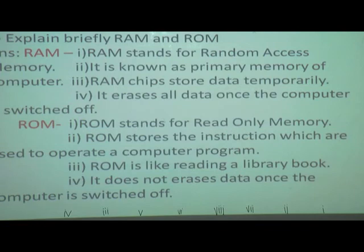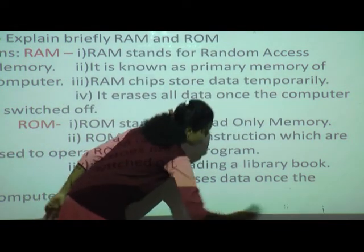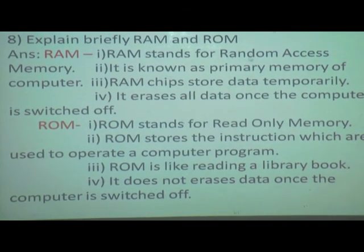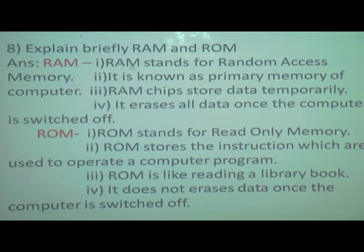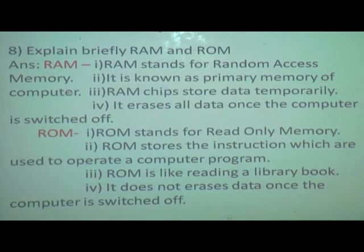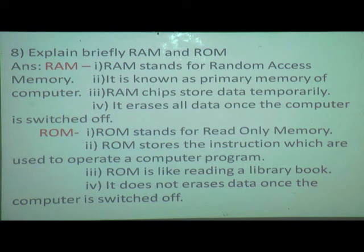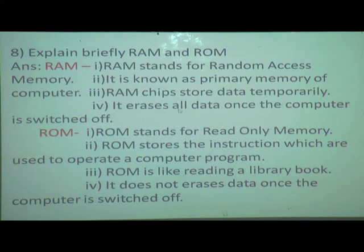Next question: explain briefly RAM and ROM. Firstly we will see about RAM. RAM stands for random access memory. It is known as the primary memory of the computer. RAM chips store data temporarily. It erases all data once the computer is switched off — if we switch off the computer, RAM erases all the data.